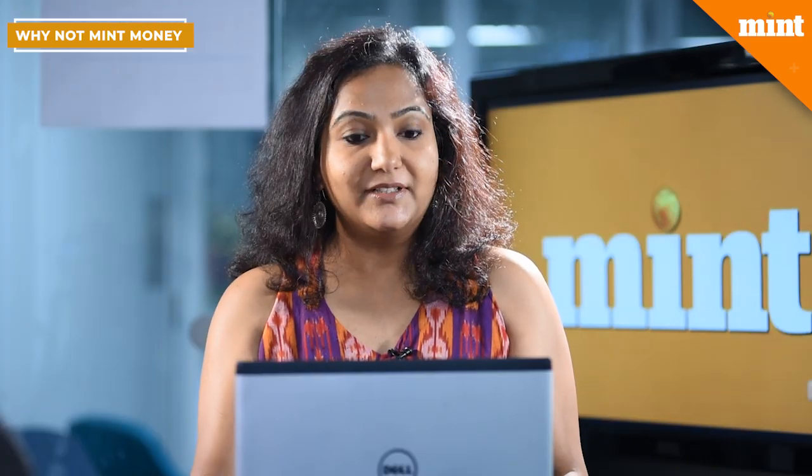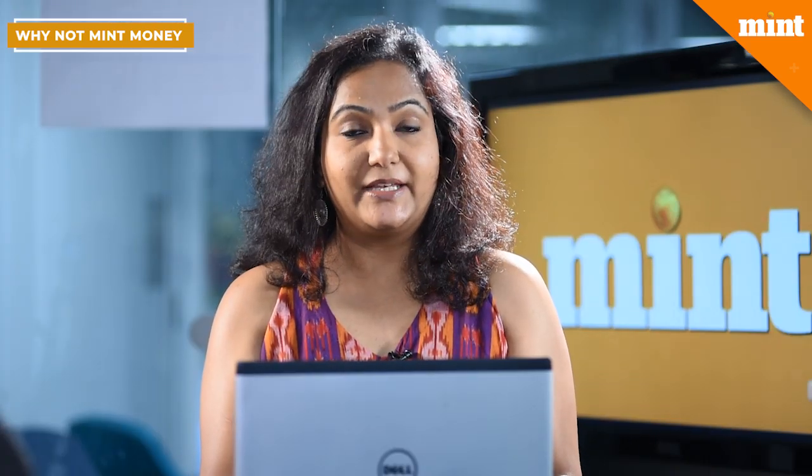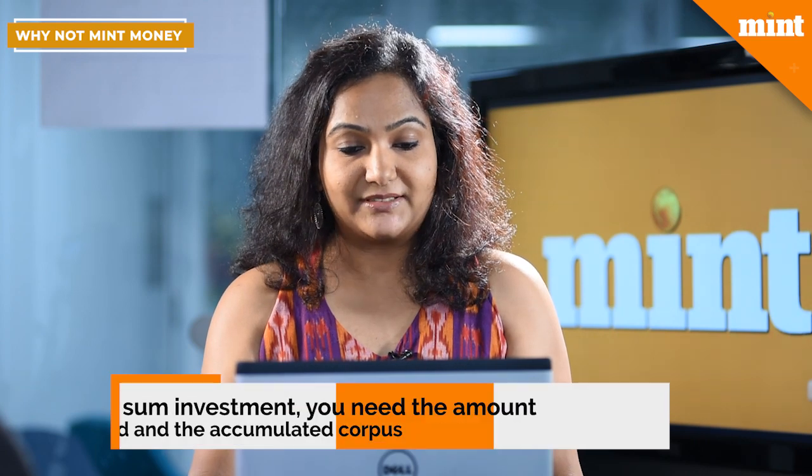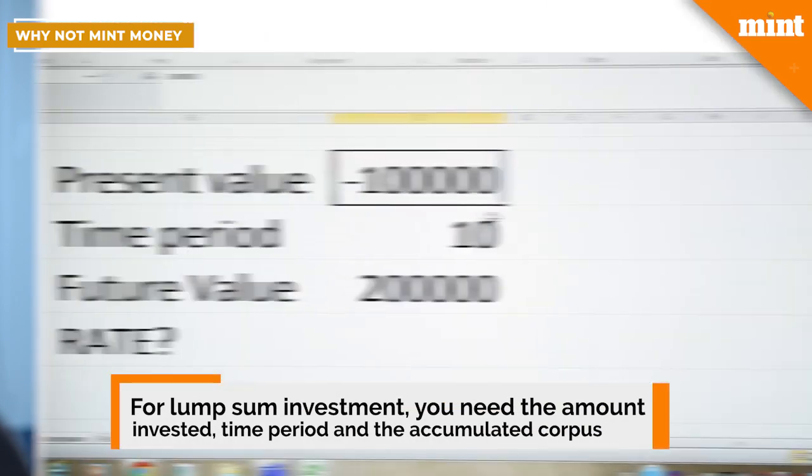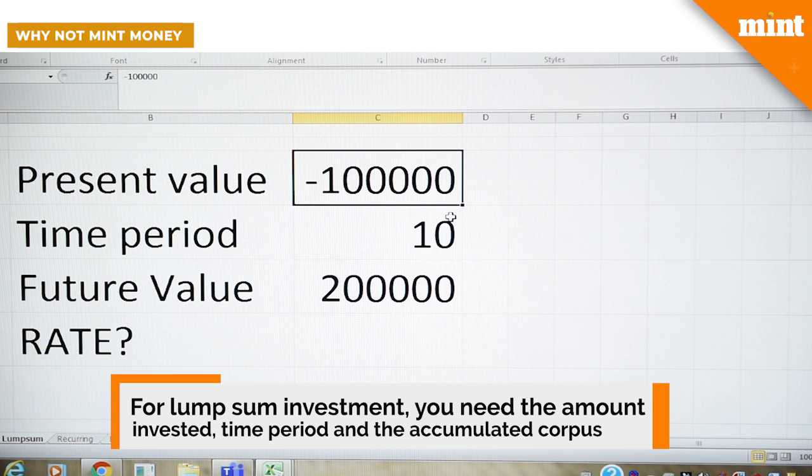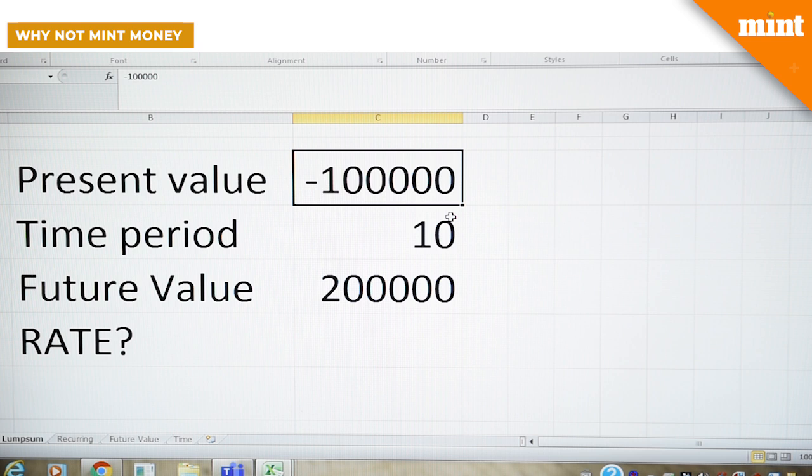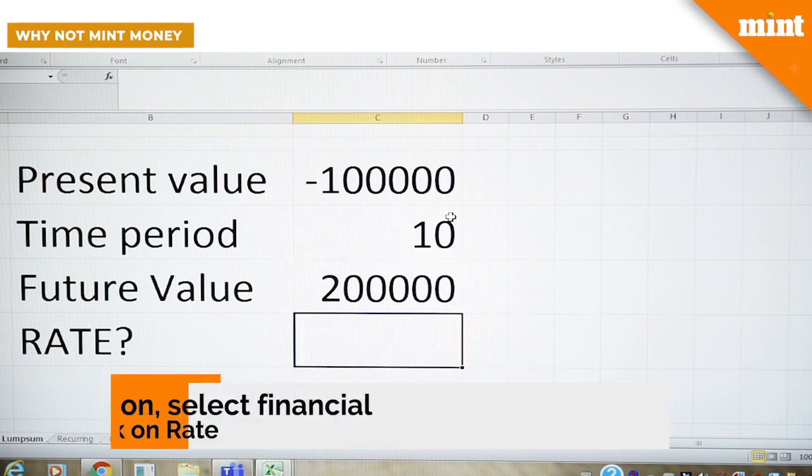Our first calculation is to calculate the rate of return. For this we would need the amount that you have invested. Please note I have indicated this amount with a negative value because it's an outflow, the time period which is 10, and the amount that you get at the end of 10 years.